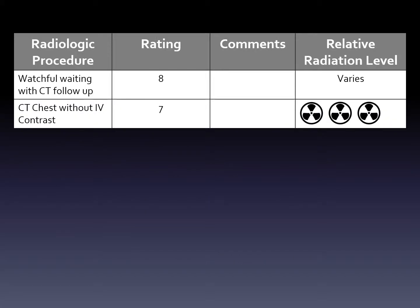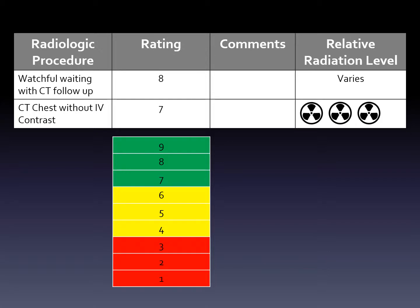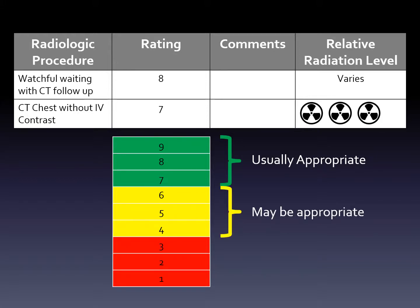When you go to appropriateness criteria, you will see a table with different options. Here's an example I used when we talked about appropriateness criteria for chest CTs. One option is actually no imaging at all, and the second option is a chest CT without contrast. If you go to various topics, there might be many more options besides just two. After the options are listed on the left, the next column is the rating, then comments, and finally a graphical representation of how much radiation the test has — so for MRI, there's none. The rating is on a scale of one to nine: high numbers means the test is appropriate, middle level numbers means it might be appropriate, and low numbers means it's probably not a good choice.